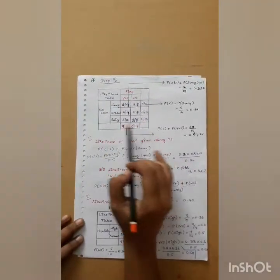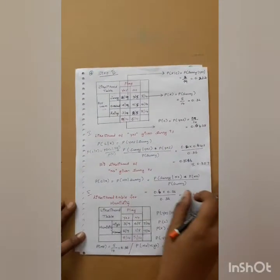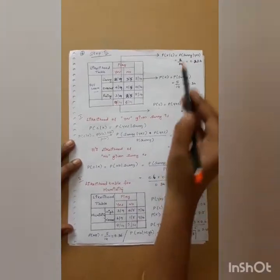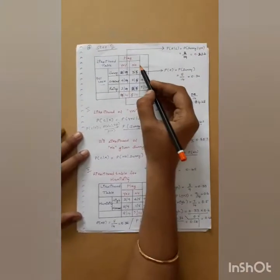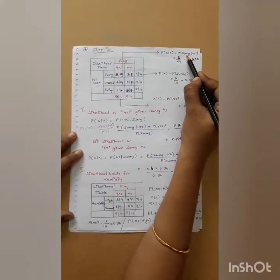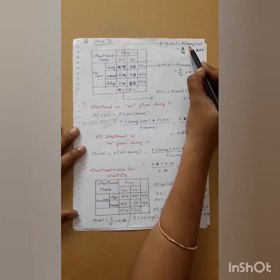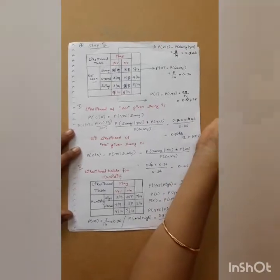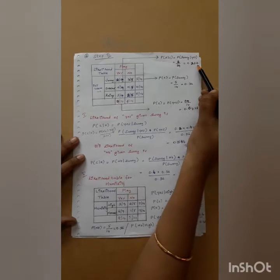We know the Bayes theorem and we are going to apply it to this likelihood table. We need to compute P(x|c), where x|c is the probability of sunny given that the condition of play is yes — meaning you are going to play in sunny weather when the play condition is yes. The probability here is 2 divided by 9, which equals 0.22.